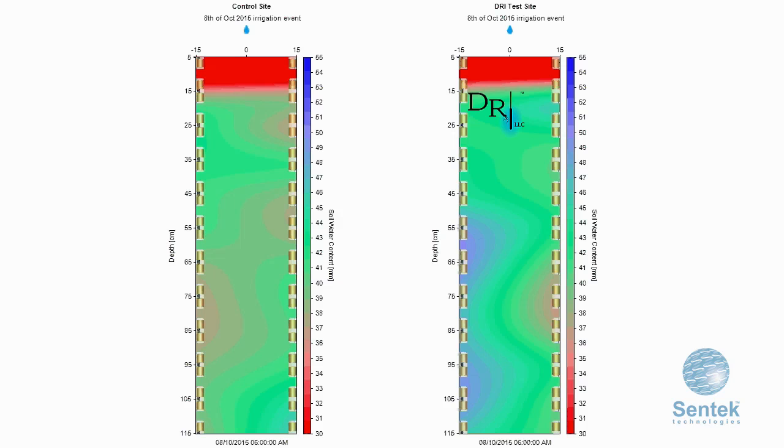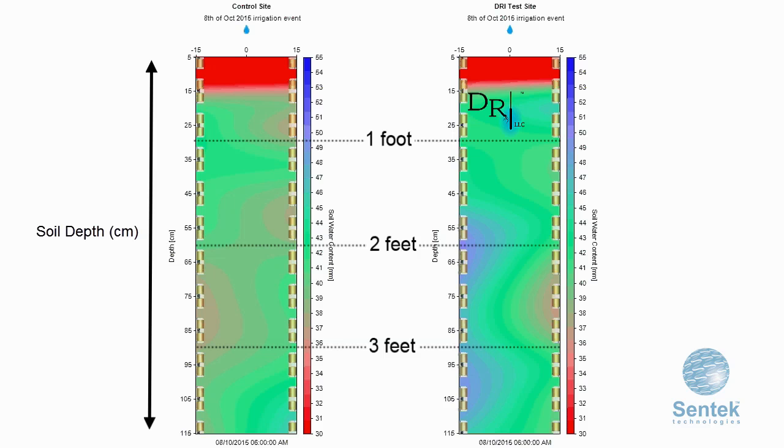The soil moisture data is displayed in 2D, with the soil depth down the side on the vertical scale and the distance from the emitter or unit on the horizontal scale at the top.